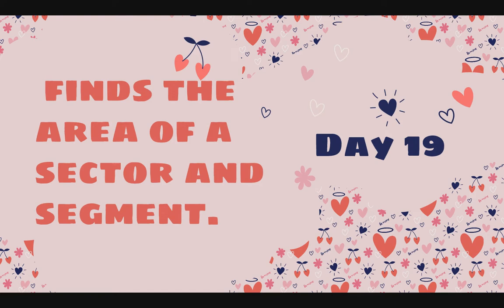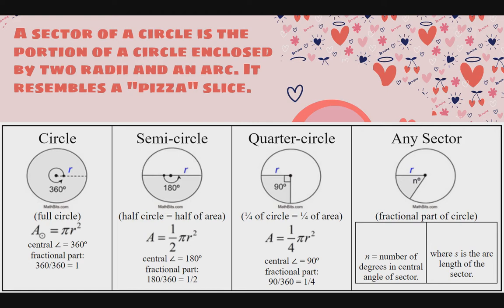Now let's proceed to day 19, which is to find the area of a sector and a segment. A sector of a circle is the portion enclosed by two radii and an arc — it resembles a pizza slice. The area of a full circle is pi r squared, and its central angle is 360 degrees. The fractional part of the central angle to the full circle is 360 over 360, which equals 1. For a semicircle, the central angle is 180 degrees, so its area is one-half times pi r squared.